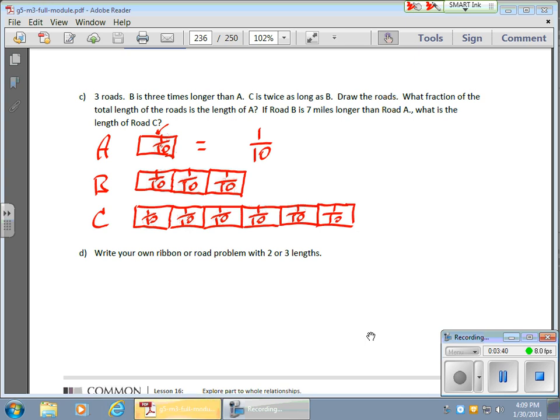Now, the second part of this says, well, what's the length of road C? If road B is seven miles longer than A. Now, here's where it gets interesting. Let me change colors. Here's where it gets interesting. If road B is seven miles longer than road A, which means this distance right here from here to here is the difference between roads B and A, and it's seven miles.